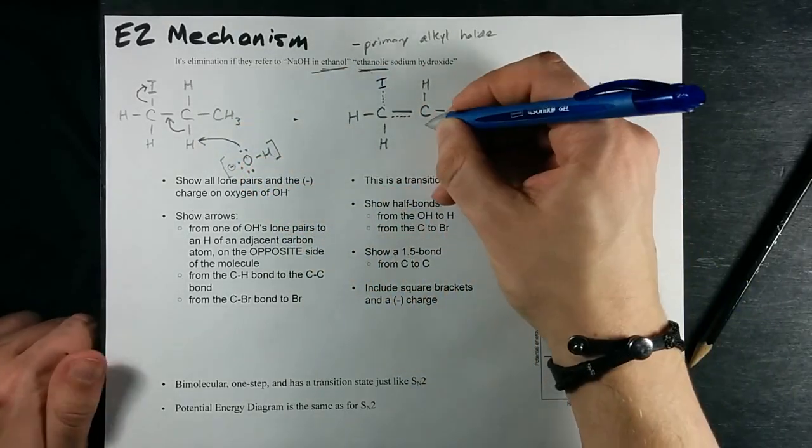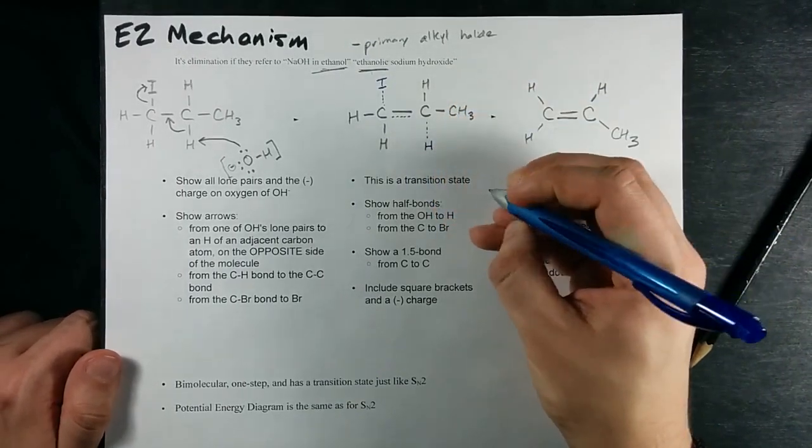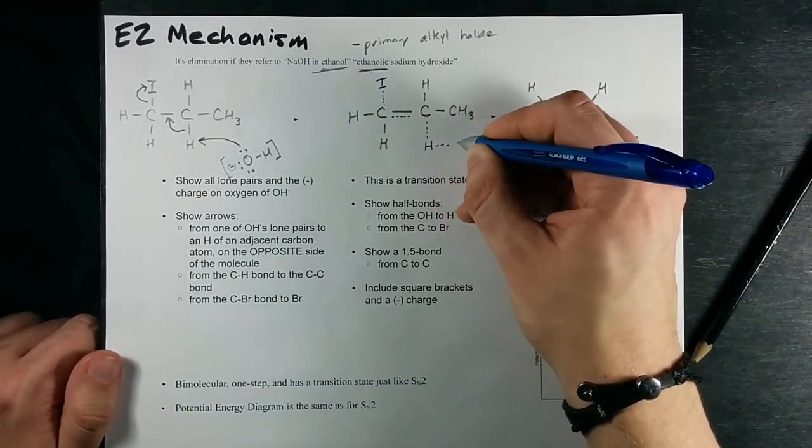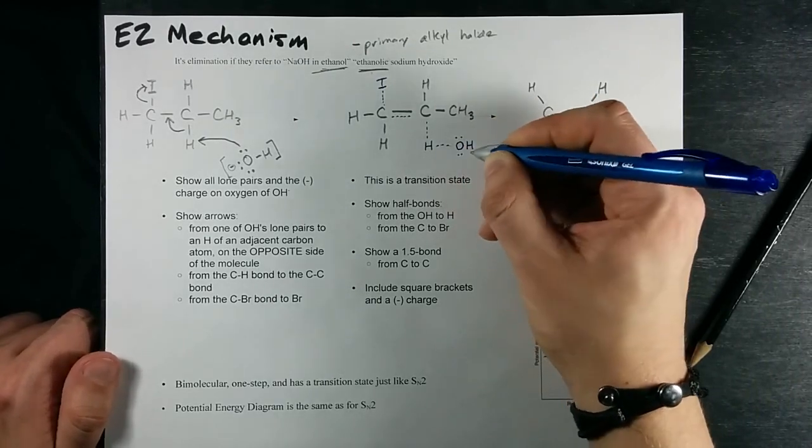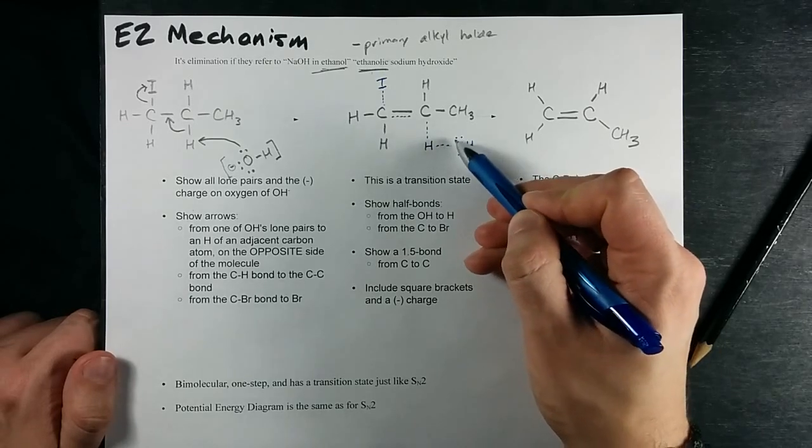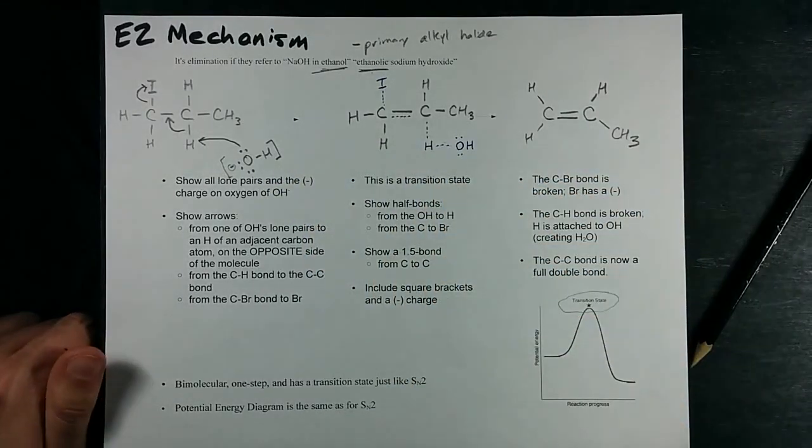This hydrogen is being stolen by my OH. This single bond is disintegrating. I will show it as a half-bond, and I'm going to show a half-bond to that nucleophile. I'm only going to show two lone pairs because the other lone pair here is what's helping to make that bond.